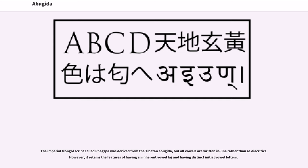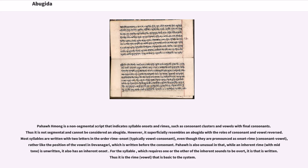The Imperial Mongol script called Phags-pa was derived from the Tibetan abugida, but all vowels are written in line rather than as diacritics; however, it retains an inherent vowel /a/ and distinct initial vowel letters. Pahawh Hmong is a non-segmental script that indicates syllable onsets and rhymes, and is not segmental so cannot be considered an abugida. It superficially resembles an abugida with the roles of consonant and vowel reversed — most syllables are written in the order rhyme-onset (vowel-consonant) even though pronounced as onset-rhyme. Pahawh Hmong is also unusual in having both an inherent rhyme and an inherent onset.